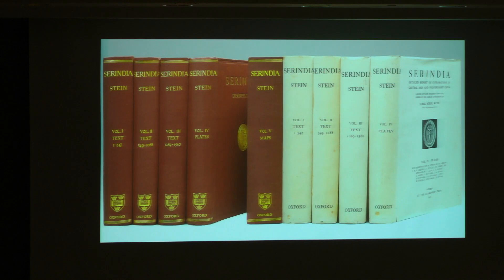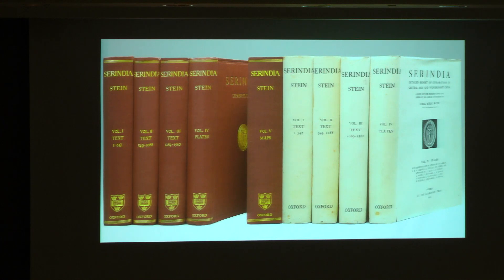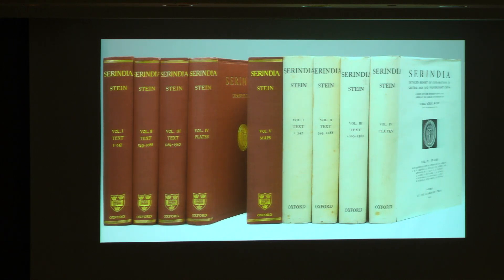These volumes are available at the library — UC Berkeley Library has a set. Despite the political context of these explorations, for archaeologists it's still a very important resource, because a lot of the sites Stein mapped are no longer visible in Xinjiang — not due to politics, but due to climate change and desertification. Many sites scholars try to locate today are covered by the desert, making Stein's work still a vital source for scholarship on Central Asia and the Silk Roads.